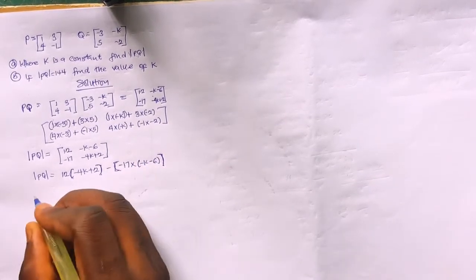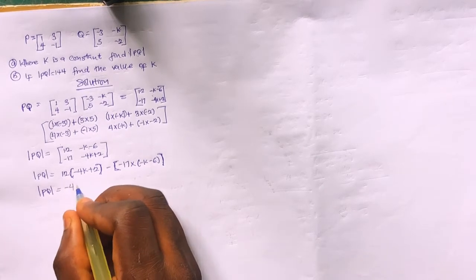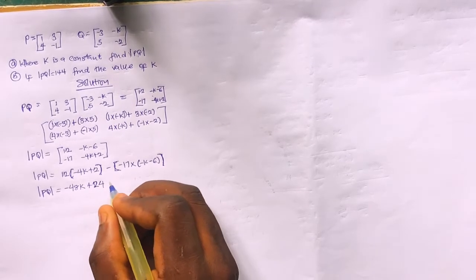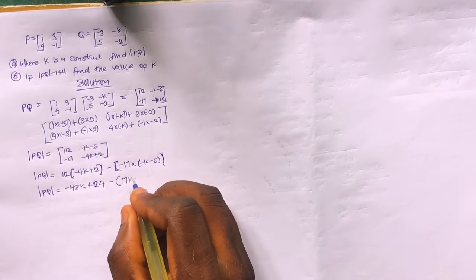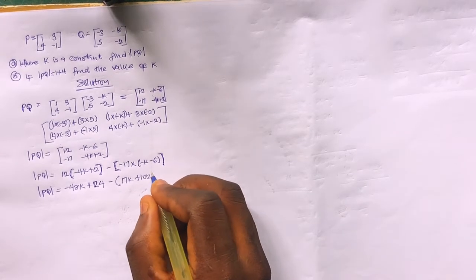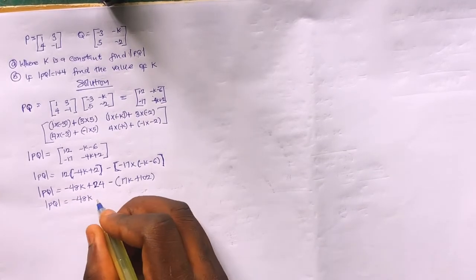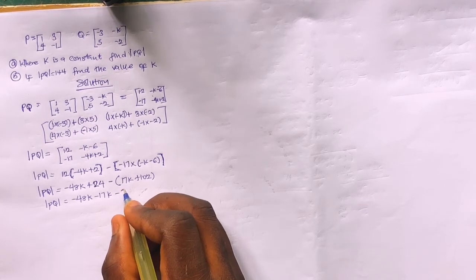Expanding: 12 times (-4k + 2) gives -48k plus 24. Then minus (-17) times (-k - 6) gives minus (17k + 102). Opening the brackets: -48k + 24 - 17k - 102, which simplifies to -65k minus 78.